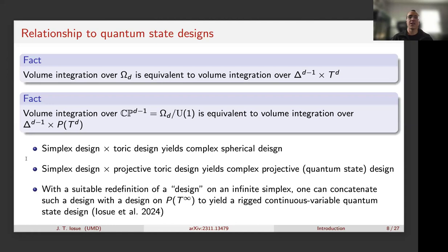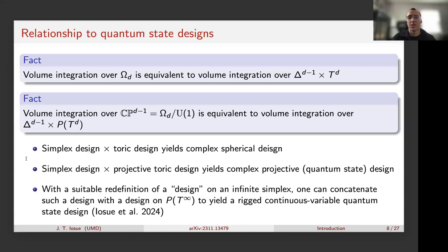We couldn't find discrete designs for the infinite dimensional case — my guess is it's impossible — but you can take a complicated measure space and find a much simpler one. For example, on the infinite torus you have an infinite product of Haar measures on each U(1) factor, but you can have a two-design by just integrating over two phases.